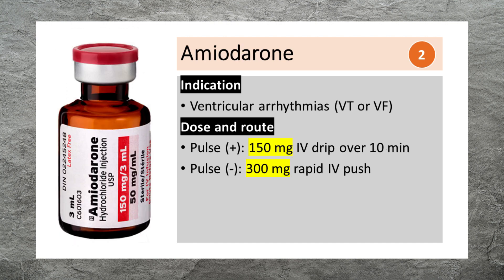Amiodarone is used to treat ventricular arrhythmias, VT or VF. It can be given as 150 mg IV drip over 10 minutes. A rapid IV push of 300 mg is indicated if the patient is pulseless.